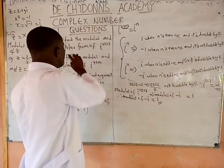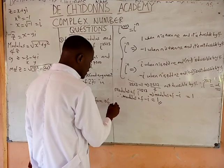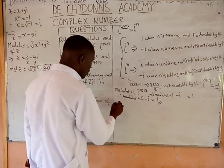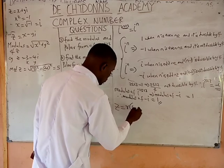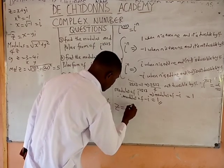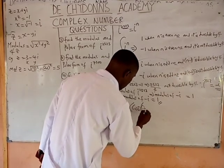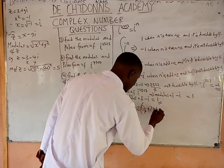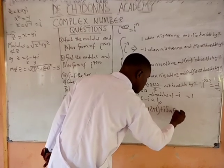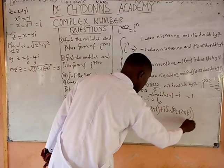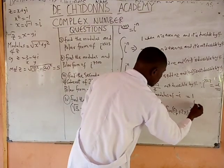Now, to get the polar form of this complex number, remember De Moivre's theorem, which states: z equals r times bracket cos(θp + 2πk) plus i sine(θp + 2πk), where θp is called the principal argument and k ranges from 0, 1, 2, 3, and so on.